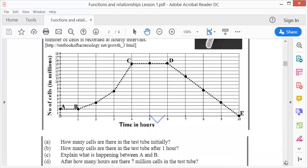D. After how many hours are there 7 million cells in the test tube? So you must go to seven, there's 7 million, go across and down, and there you are. After three hours.